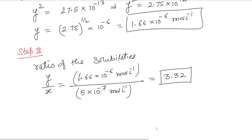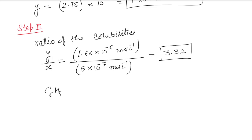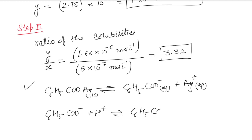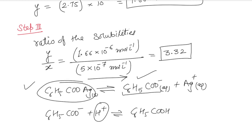Why does the solubility increase? Silver benzoate dissociates to give benzoate ions and Ag⁺ ions. When we add the acidic buffer, H⁺ ions come into the picture and combine with benzoate ions to form benzoic acid. This decreases the concentration of one of the products — the benzoate ion — so the equilibrium shifts forward according to Le Chatelier's principle, and that is why the solubility keeps increasing.